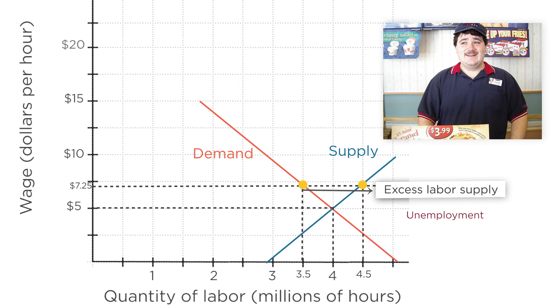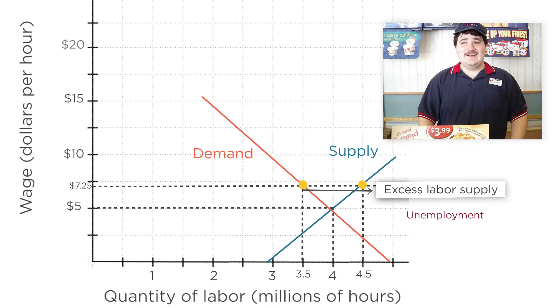And in this new equilibrium, this triangle here represents the deadweight loss. These workers would be happy to work for between $5 and $7.25, and restaurants would be happy to hire them at that wage, but the government won't let these trades be made. As a result, social welfare is dropped by the area of this deadweight loss triangle. Generally speaking, in a competitive labor market equilibrium, a minimum wage that's higher than the market wage will cause unemployment. At the same time, some workers will get higher wages than they would have had without the minimum wage. So as is often the case in economics, we have a trade-off: some workers are better off, but total welfare has fallen.